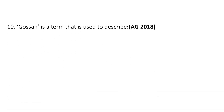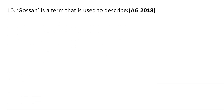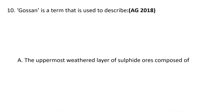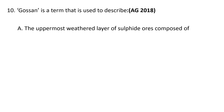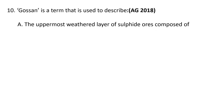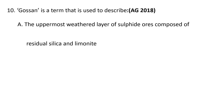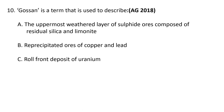Next question. Gossan is a term used to describe: A. The uppermost weathered layer of sulphide ores composed of residual silica and limonite.